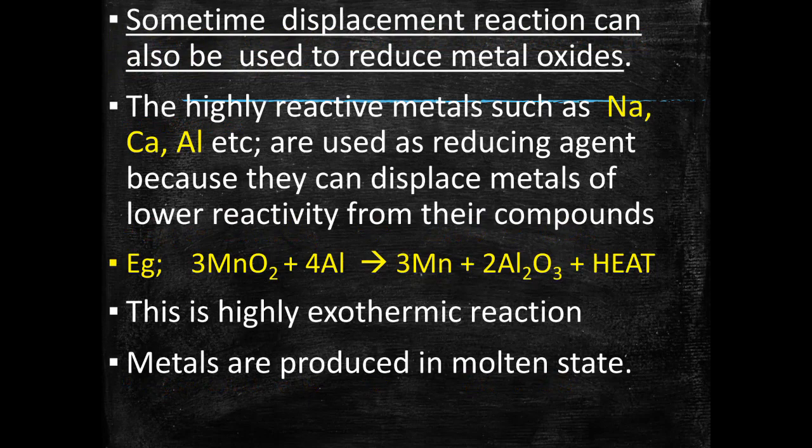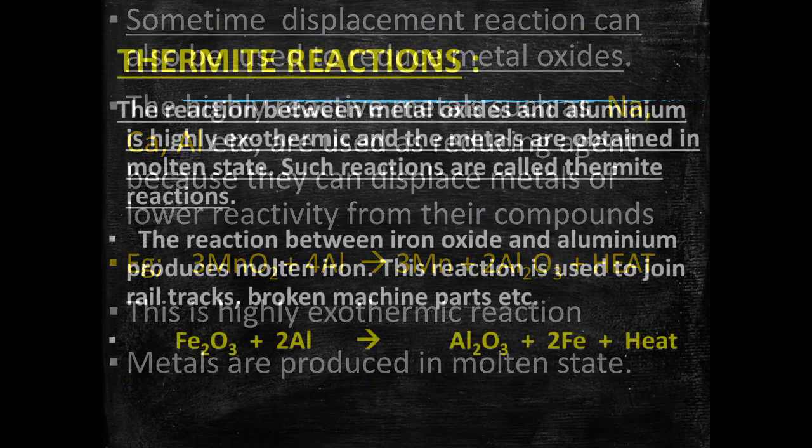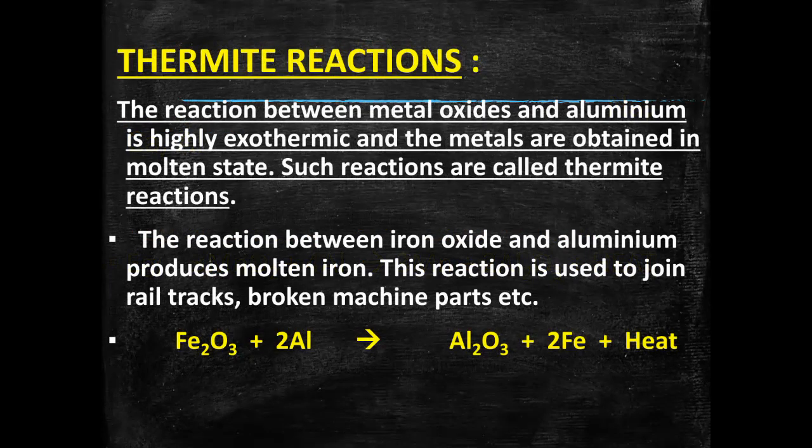As you all know, a reaction in which heat is released is called an exothermic reaction. This reaction is highly exothermic, so the metals produced are in a molten state. This type of reaction comes in a category called thermite reaction. The reaction between metal oxides and aluminium is highly exothermic and the metals are obtained in molten state — such reactions are called thermite reactions. There is a very important application of these reactions.